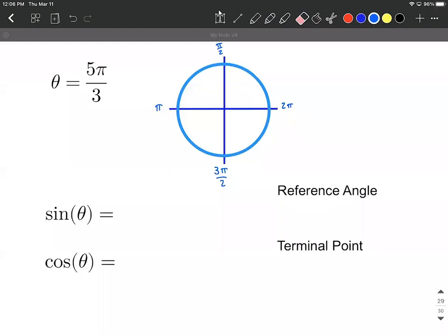Okay, on this example we're given an angle theta, five pi over three. We're asked to find the exact value of sine and cosine, and there are a lot of different ways to ask the same question.